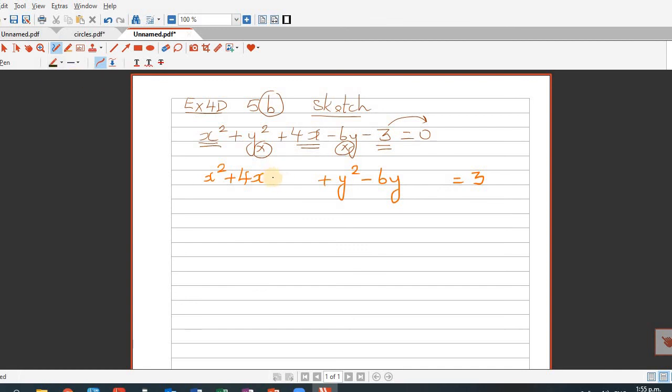To complete the square, this is half of this number which is plus 2 squared, so I've written 4 on the left hand side so I have to write 4 on the right hand side. The half of negative 6 is negative 3 squared, that is 9, so I'm writing 9 on both sides.